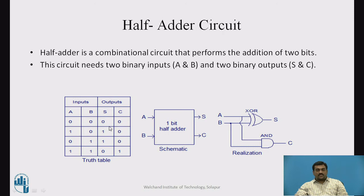From the truth table one can find the logical expressions for sum and carry. Sum is equal to A XOR B, whereas carry is equal to A AND B. This is also represented in the diagram: S equals A XOR B, and C equals A AND B.